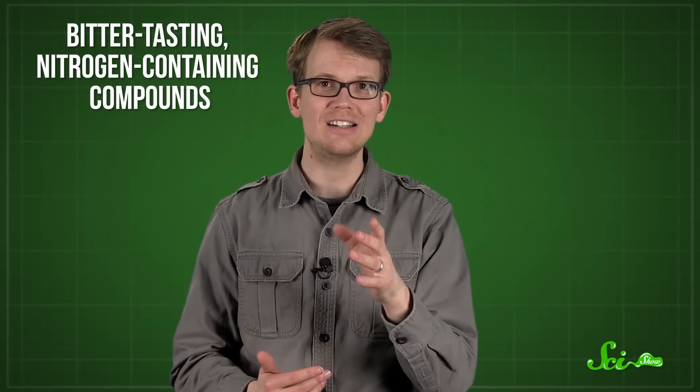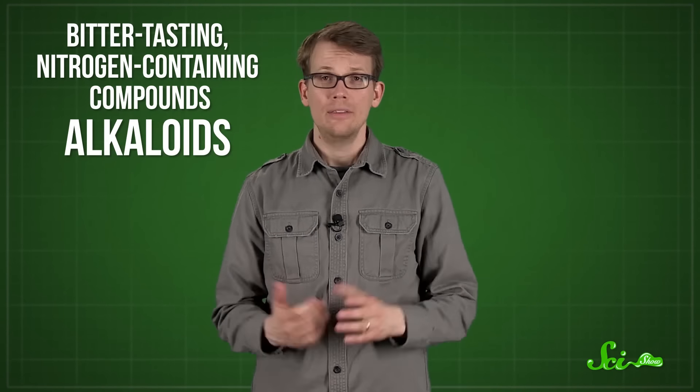Many of the plant-based substances people use belong to a broad group of bitter-tasting, nitrogen-containing compounds called alkaloids. These compounds don't seem to be strictly necessary for plants to survive, so they probably offer evolutionary bonuses, like a defense against anything that tries taking a bite out of it. Their names usually end in I-N-E, and you've probably heard of some of them, like caffeine, nicotine, morphine, and a lot of them have effects on our bodies that are pretty strong, for better or worse.